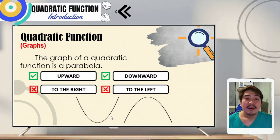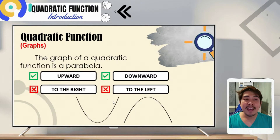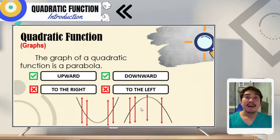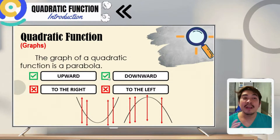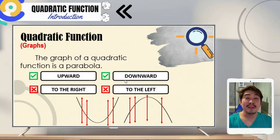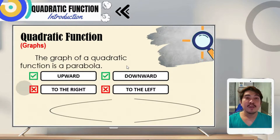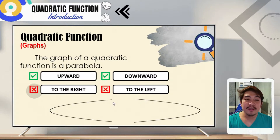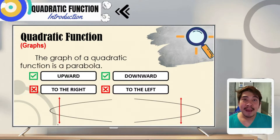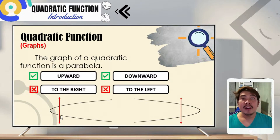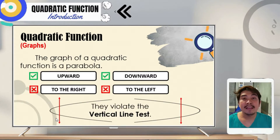Looking at the parabolas: one opens upward and the other opens downward. If we pass a vertical line through either of these two graphs, it will pass through exactly one point. Therefore, we can say these parabolas are quadratic functions because they do not violate the vertical line test. For parabolas that open to the right and to the left, the vertical line passes at two points, so they violate the vertical line test and are not considered quadratic functions.